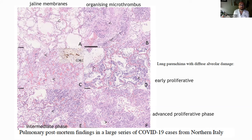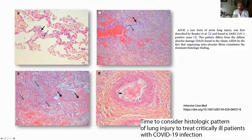Also important is the appearance of some organizing microthromboses in the pathology samples that we have. From a French study, we also see that acute fibrinous organizing pneumonia is important — from seven patients with histological samples, six had this pattern.